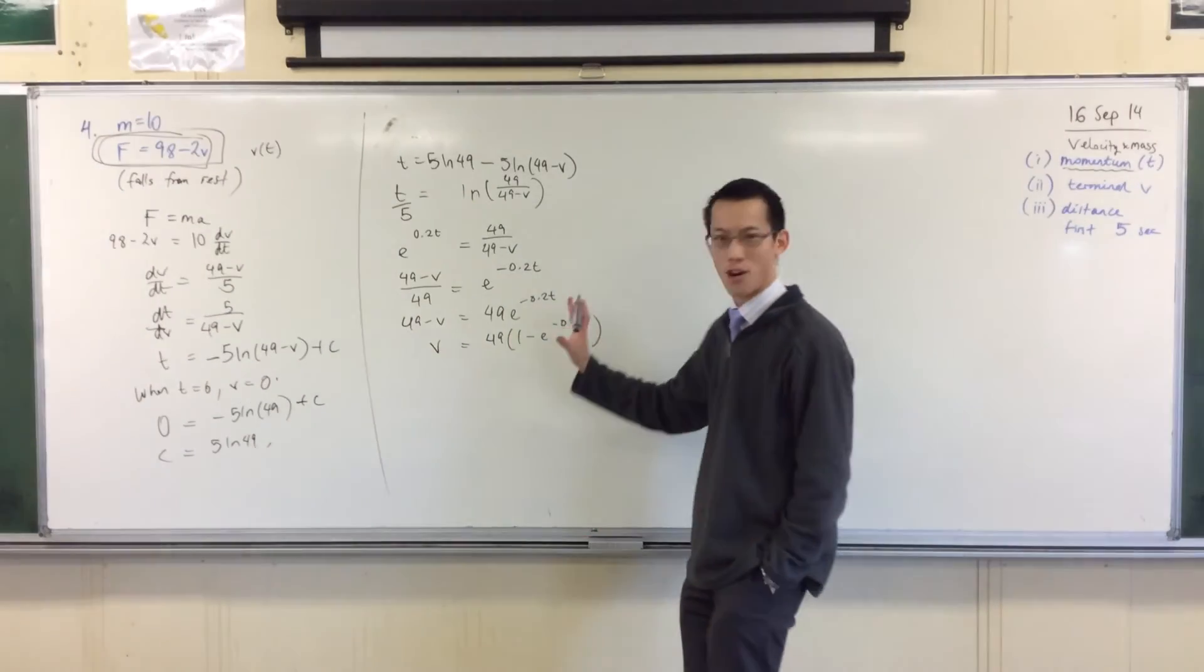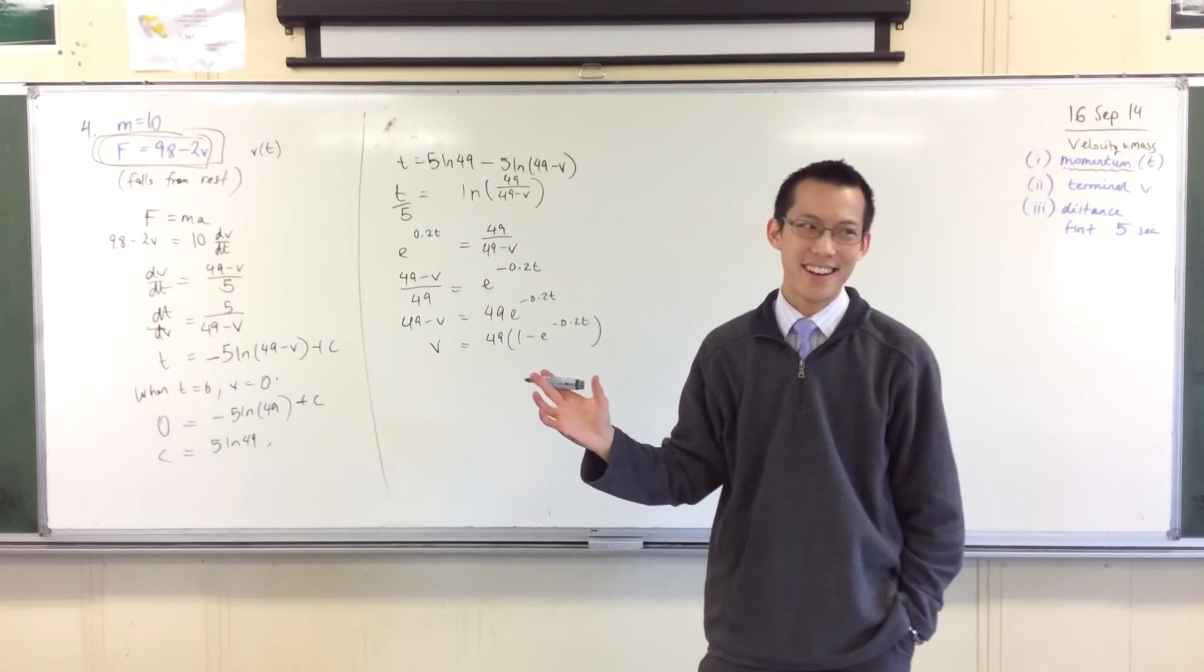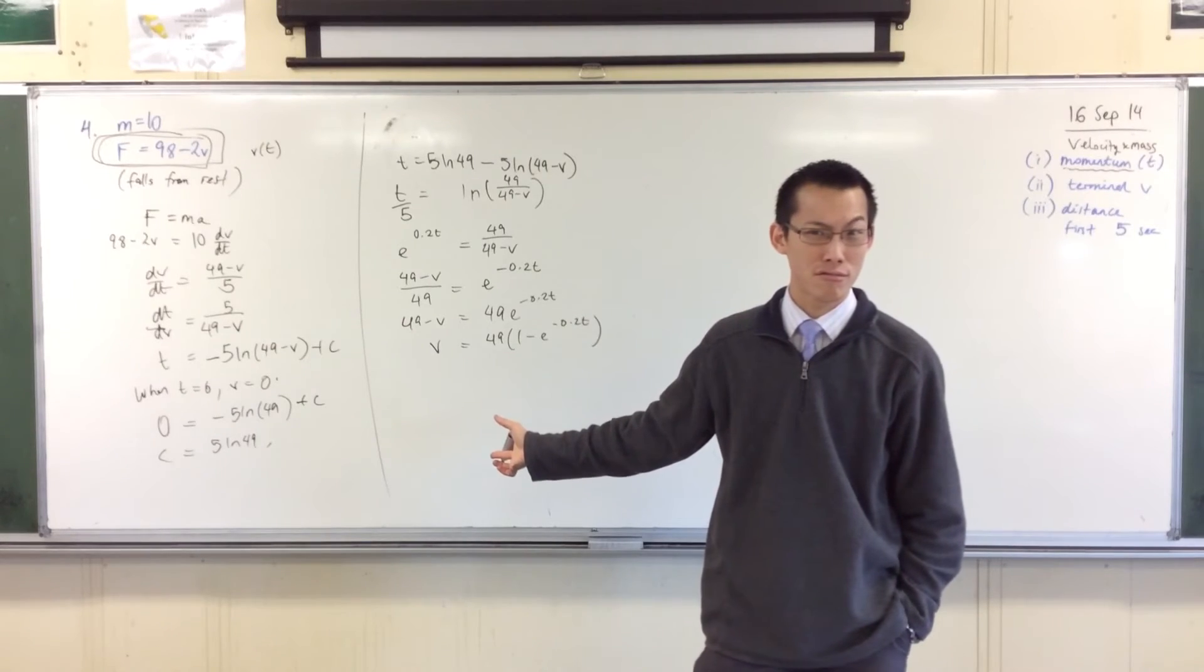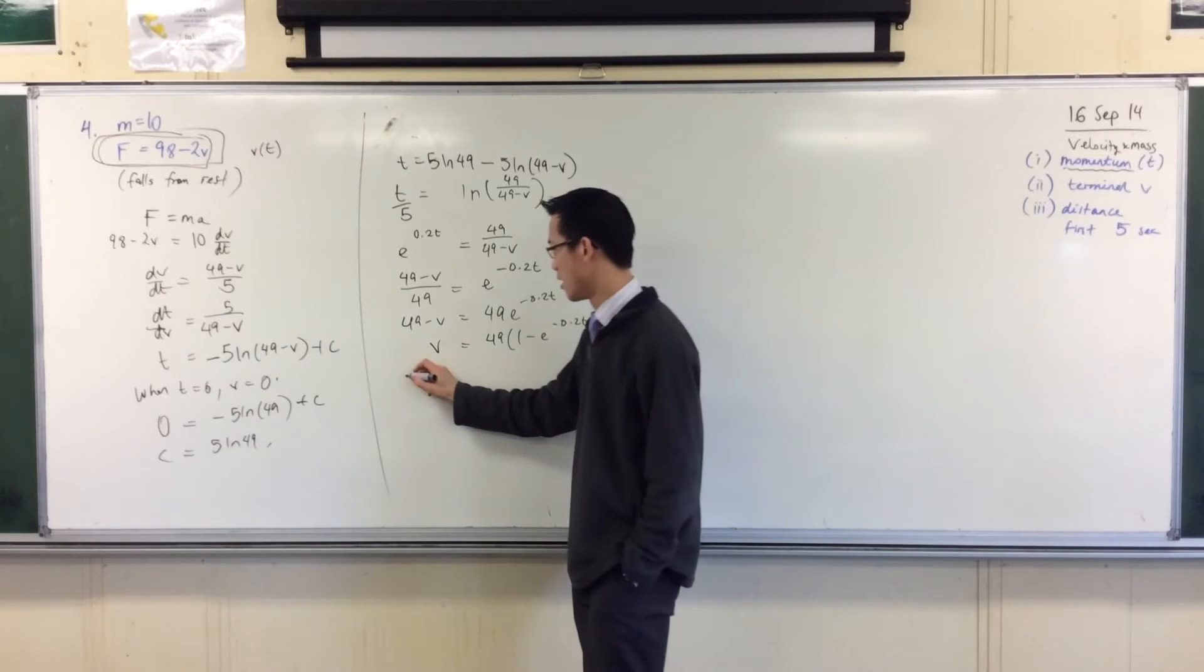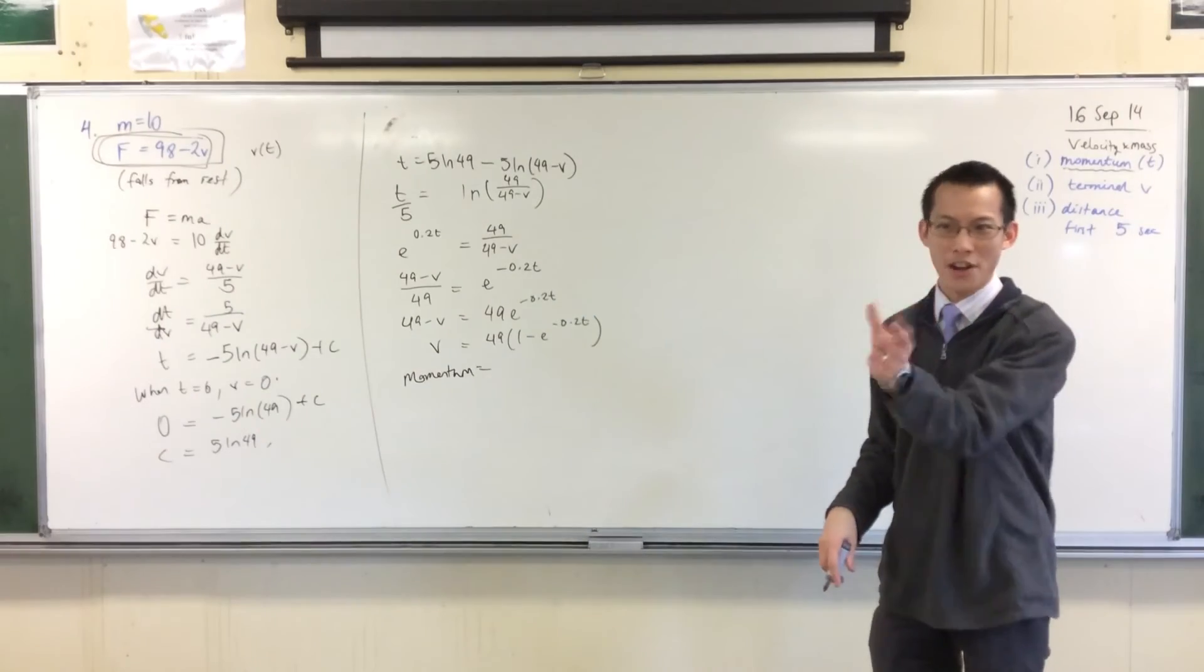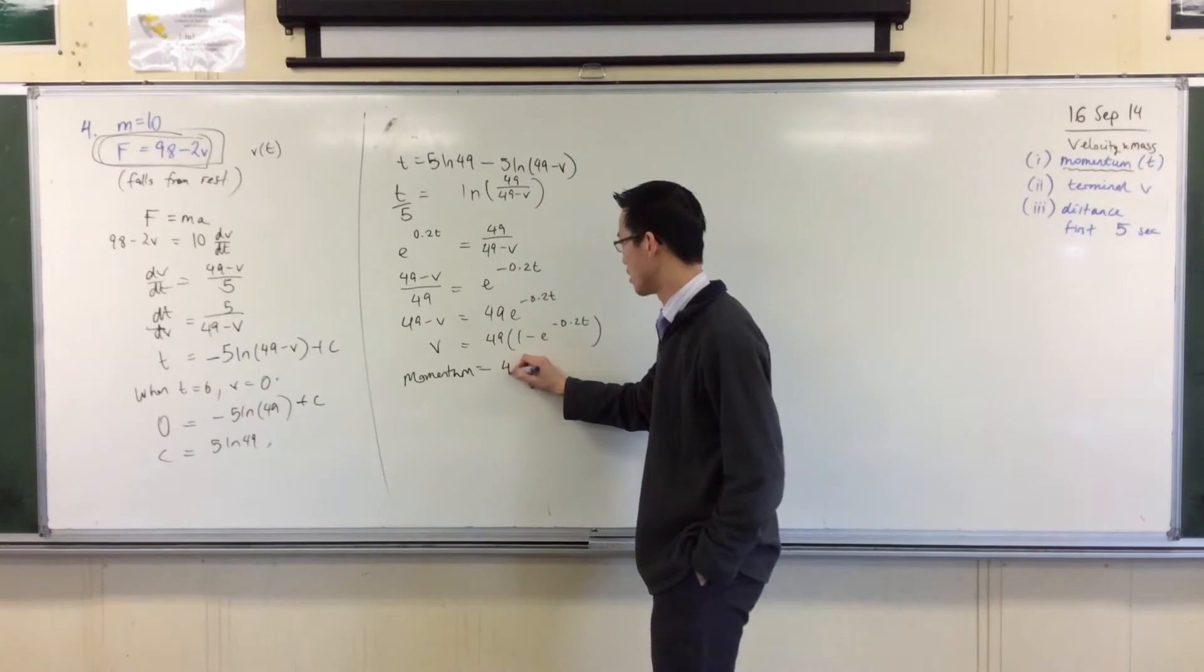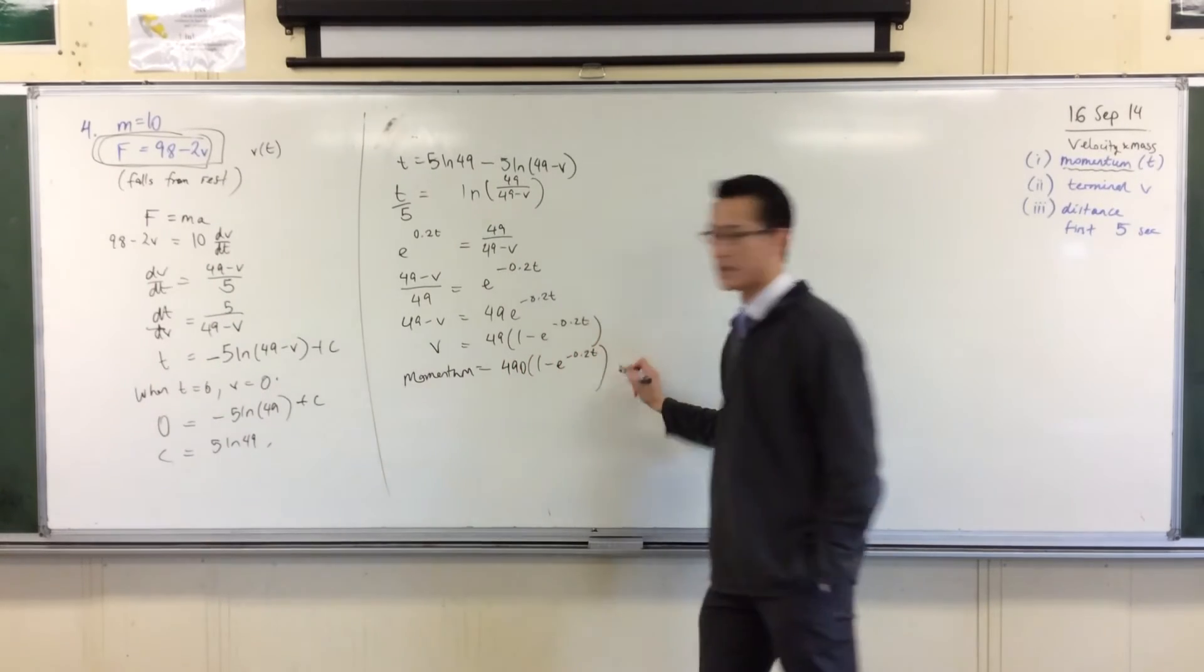Alright, so, hold on. We were mid-idea. What do I need to change? I have to multiply by mass, right, because I don't want velocity. I want momentum, right? So, almost, we don't add in mass. We multiply by mass, and mass is 10, which gives you this. Done.